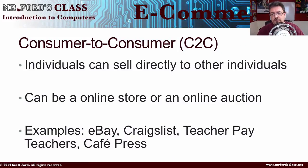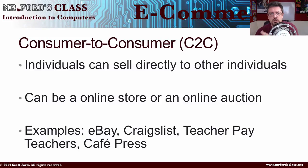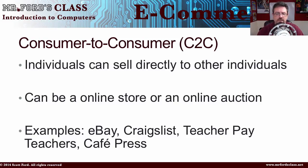As a consumer, you definitely want the best price and you want your money to go far, and this e-commerce thing has made it possible. The next type is consumer-to-consumer, C2C. This is when you, as an individual, sell directly to another individual. You see online auctions — for example, eBay. Craigslist is another example. Teachers Pay Teachers, which I mentioned earlier — I do have a storefront there — and Cafe Press, where you can make different things and sell them to people.